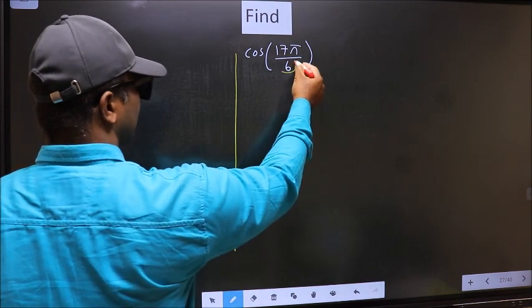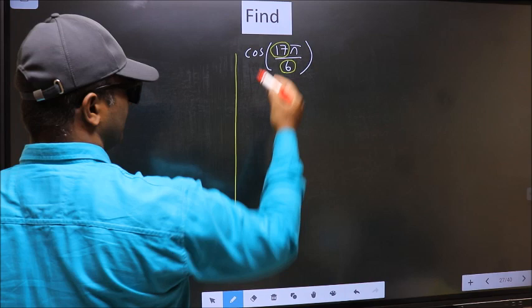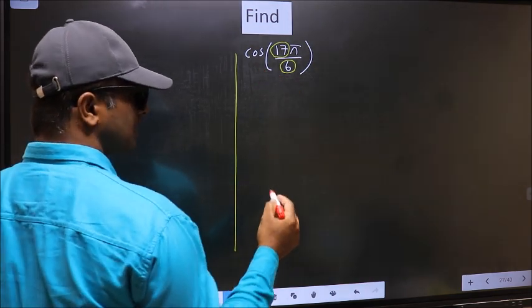In the denominator, we have 6. In the numerator, 17. Now you should check,